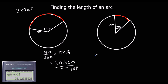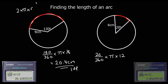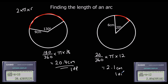For the second question, we've got 20 degrees out of 360 — that's the fraction of the circumference we want — times pi times the diameter, which is 12 (double the radius). Type that into the calculator and the answer is 2.1 centimetres to one decimal place.